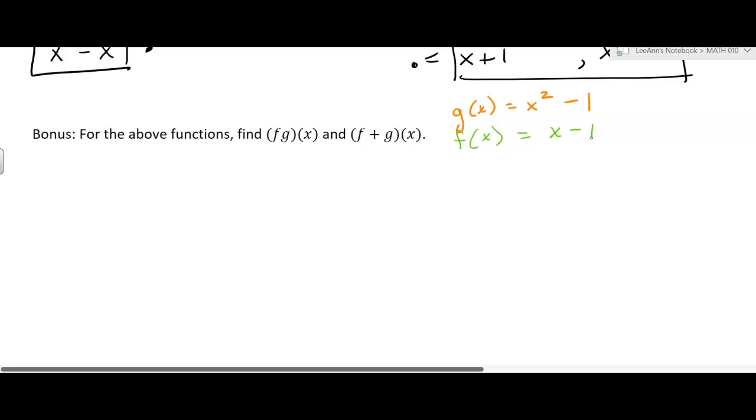Okay, so now we want to multiply. So we're going to take fg of x, or f times g of x. That's equal to f of x times g of x. So in our case, we're going to have x minus 1 times x squared minus 1.